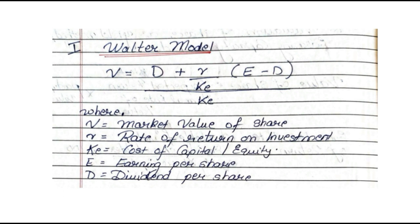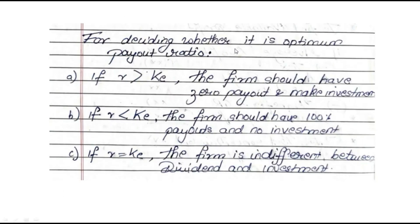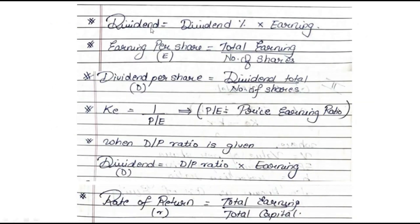Along with the main formula, there are a few extra things which can be asked — for example, deciding whether it is an optimum payout ratio. There are three conditions: if your rate of return is more than your cost of capital, the firm should have zero payout and make investment; if your rate of return is less than your cost of capital, the firm should give full dividend; otherwise it is up to the company.